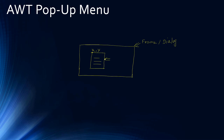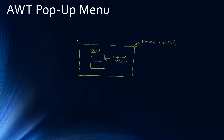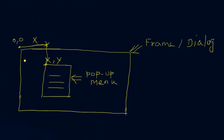This is the pop-up menu. To display a pop-up menu we need a container. The container can be a frame or a dialog. We need to tell in which location we want to display it, so we will specify x and y coordinates. This is the origin at 0,0 in the container. This value specifies our x location and this one represents our y location.